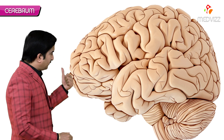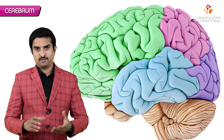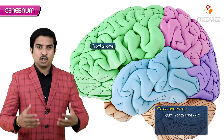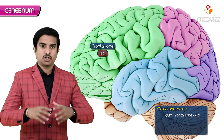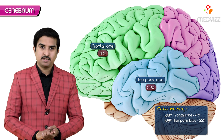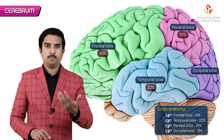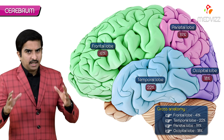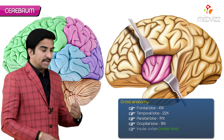Each cerebral hemisphere is divided into four lobes of unequal size. The frontal lobe occupies approximately 41 percent of the total neocortical volume. The temporal lobe accounts for 22 percent, the parietal lobe 19 percent, and the occipital lobe occupies 18 percent of the cerebral volume.